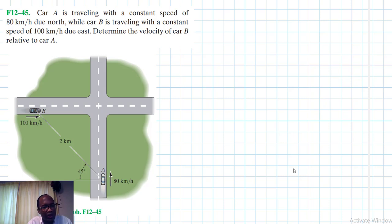Welcome to this screencast. The problem reads: Car A is traveling with a constant speed of 80 kilometers per hour, and Car B is traveling with a constant speed of 100 kilometers per hour. Determine the velocity of Car B relative to Car A.